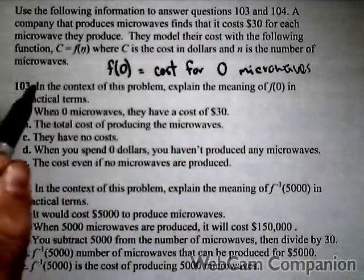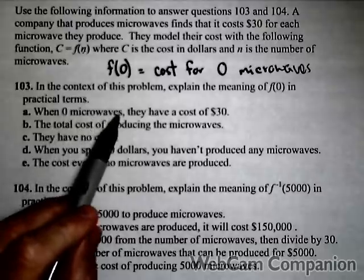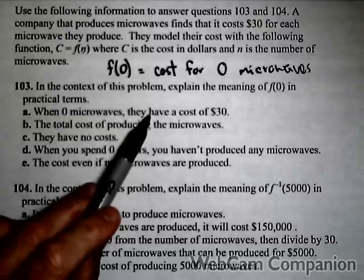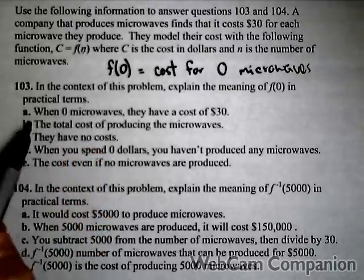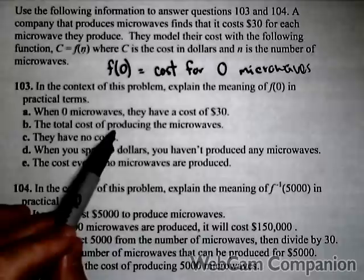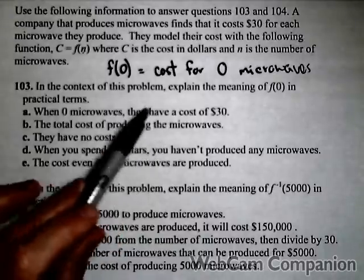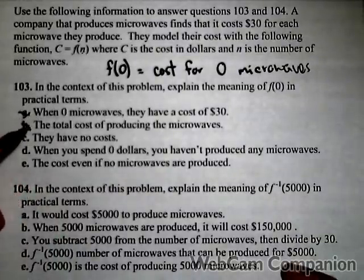Let's see which answer matches best. 'When 0 microwaves are produced, they have a cost of $30' - well, we don't know what their cost is, we just know it's f(0). 'The total cost of producing the microwaves' - we're not producing any, so it's not b. 'They have no cost' - it's not cost that was 0, it was the number of microwaves.